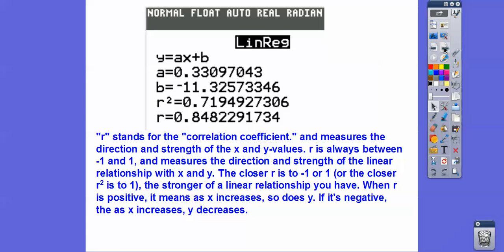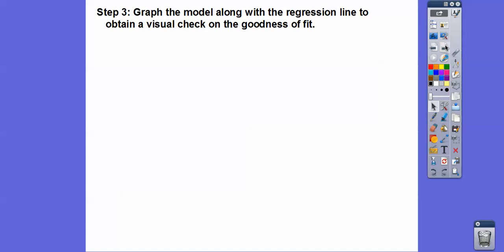The r stands for correlation coefficient — that's more AP Stats material. If r is positive, the points are going up; if negative, they're going down. It tells you direction. The closer r is to 1, the closer the points are to a line. If r is close to negative 1, just square it — as long as r-squared is close to 1, like 0.72-ish, it's close to a linear regression.